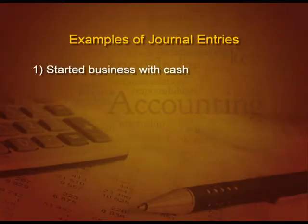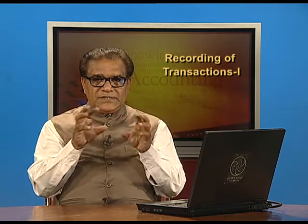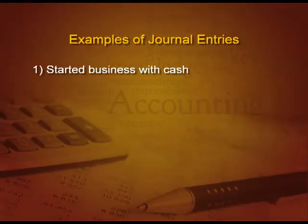Let us see some examples of journal entries. Example: Started business with cash. Cash is an asset, and an asset is debited when it comes in. So the entry is: Cash account debit, To capital account, because it is increasing your capital. Cash is coming in, so asset is debited, and capital increases when you contribute the money, so capital account is credited.